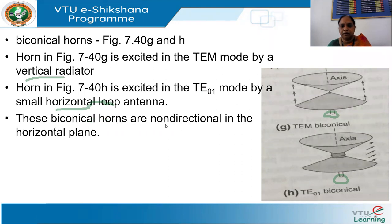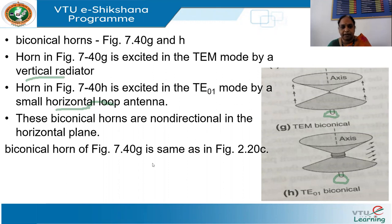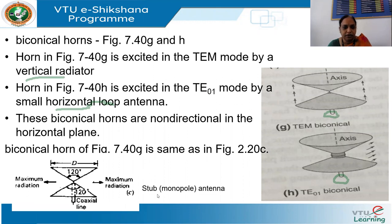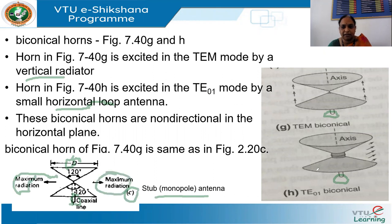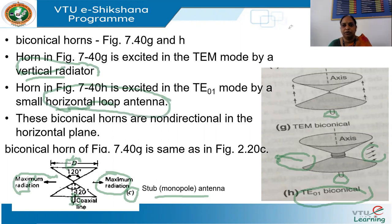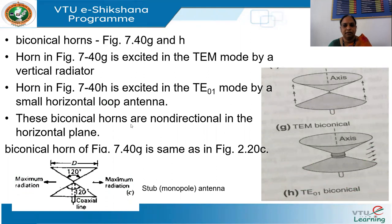Biconical horns are non-directional in the horizontal plane. This is similar to a monopole or stub antenna variation where you have flaring out, fed through a coaxial line, with maximum radiation at the center. Similarly, in this TE01 biconical antenna there is maximum radiation at the center, and it is fed by a vertical radiator or a small horizontal loop antenna.